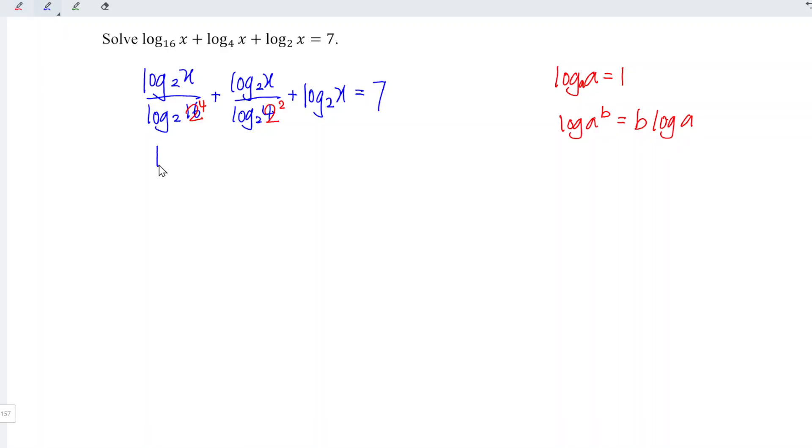we can rewrite as log x to the base 2 divided by 4. So which means that we have 1/4 by using the first log.